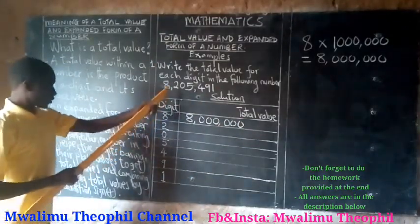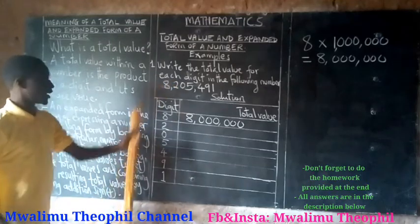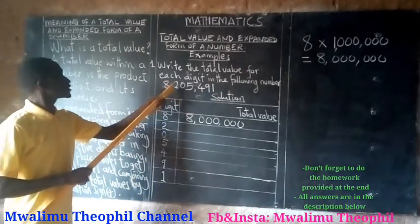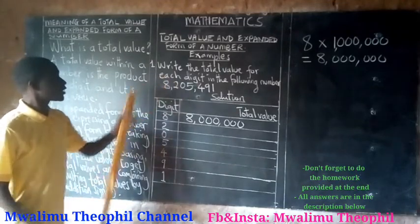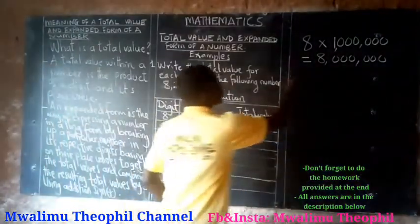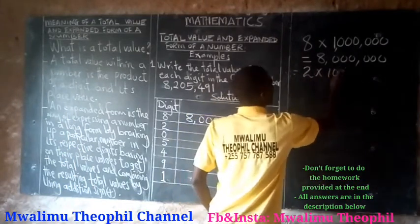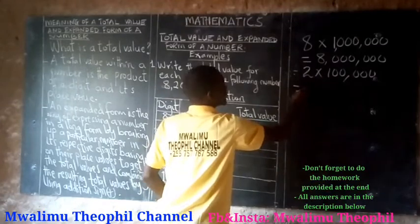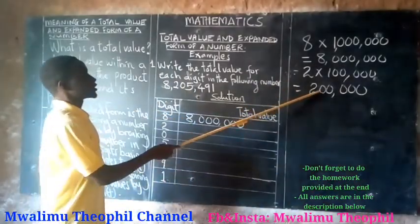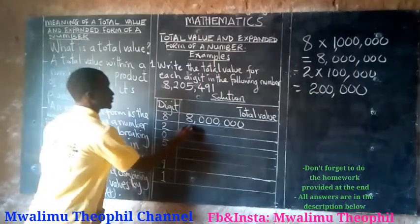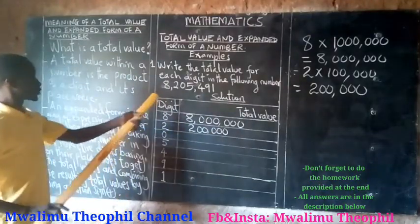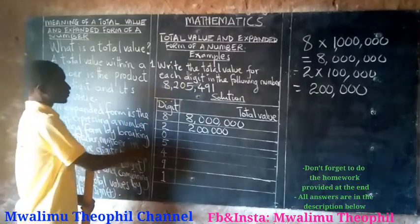The second digit is 2. The total value of 2 will be obtained by taking 2 times its place value. The place value of 2 in this number is in hundred thousands, so we take 2 times one hundred thousand, which gives us two hundred thousand. So the total value of 2 in this number is two hundred thousand.